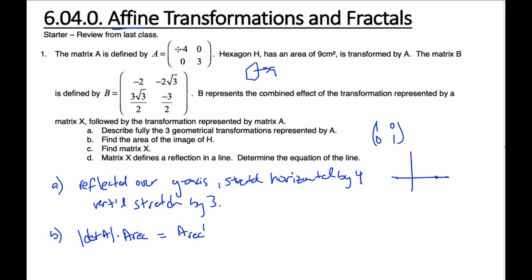So the determinant of A is going to be negative 4 times 3, which is 12, subtract 0. Absolute value of negative 12 is 12, times the area of the hexagon. And that is going to be 108 centimeters squared, is the area of the new hexagon H.